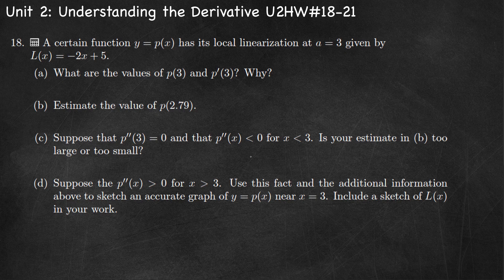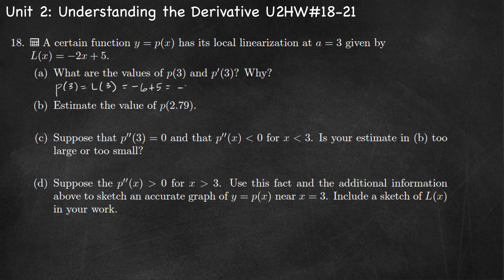Part A asks us to find the values of p of 3 and p prime of 3. We know that p of 3 is equal to L of 3. p of 3 refers to the point of tangency, so to find L of 3 we substitute x equals 3 into the equation for L of x: negative 2 times 3 plus 5 equals negative 1. So p of 3 equals negative 1. At the point of tangency, the curve and the tangent line share the same x and y coordinates.